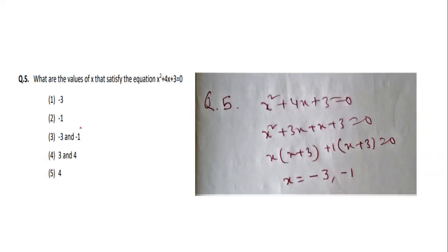Question five: find the values of x for x² + 4x + 3 = 0. Factoring: x² + 3x + x + 3 = x(x + 3) + 1(x + 3) = (x + 1)(x + 3) = 0. This gives x = −1 and x = −3.